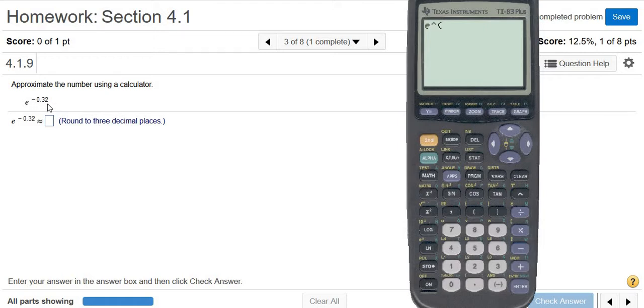Now we have to type in negative 0.32. Now the important thing in this problem is that the negative sign is down here. The one right here, where I'm wiggling my mouse, that's the minus sign. If you hit that one, you'll get an error. Watch.